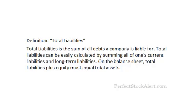Total liabilities is the sum of all debts a company is liable for. Total liabilities can be easily calculated by summing all of one's current liabilities and one's long-term liabilities. On the balance sheet, total liabilities plus equity must equal total assets.